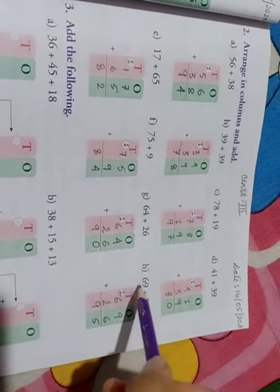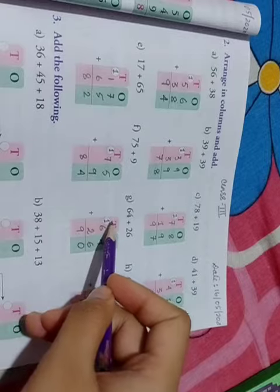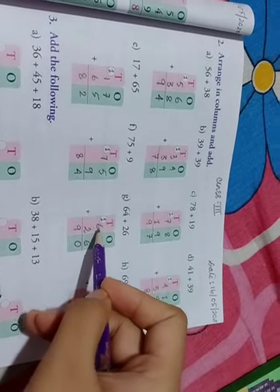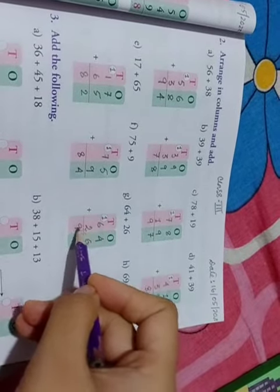Next, 64 plus 26. 4 plus 6 is 10, write 0 and 1 is carried over. 1 plus 6 is 7, 7 plus 2 is 9.